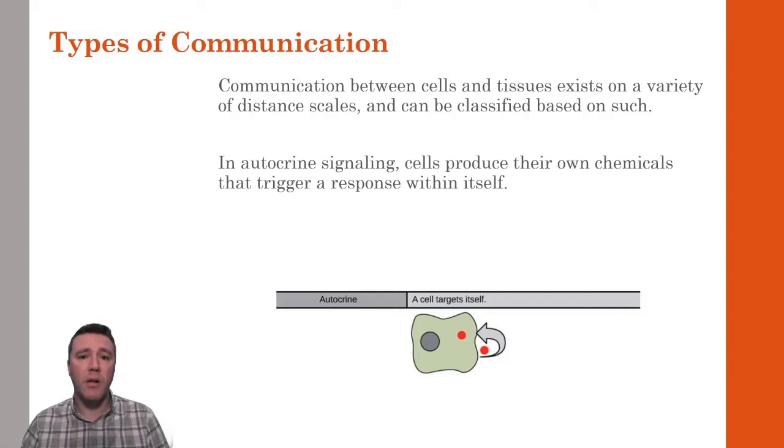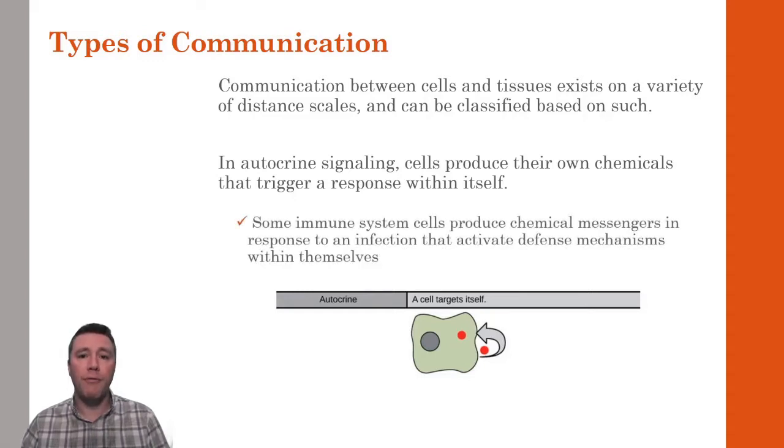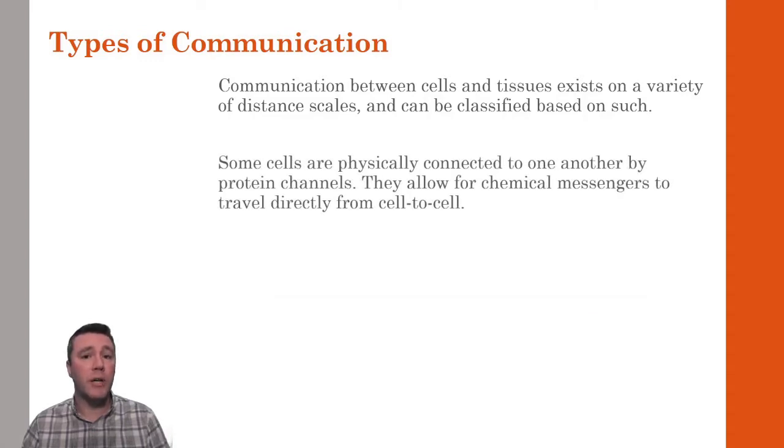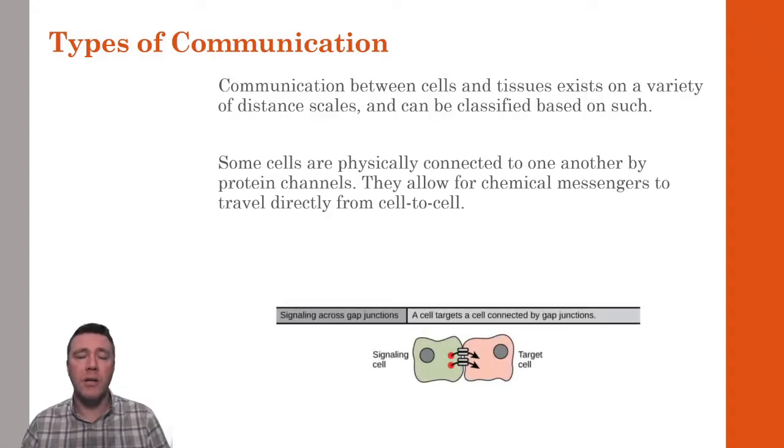which is defined by a cell producing a chemical messenger that triggers a response within itself. For example, in response to an infection, some immune system cells will produce chemical messengers to initiate defense mechanisms within themselves. The second type of communication involves a physical connection between two cells. In this way, a signaling cell can produce a chemical messenger that will travel through a protein that connects it to a recipient target cell. In animal cells, these connector proteins are called gap junctions, and in plant cells, they're called plasmodesmata.